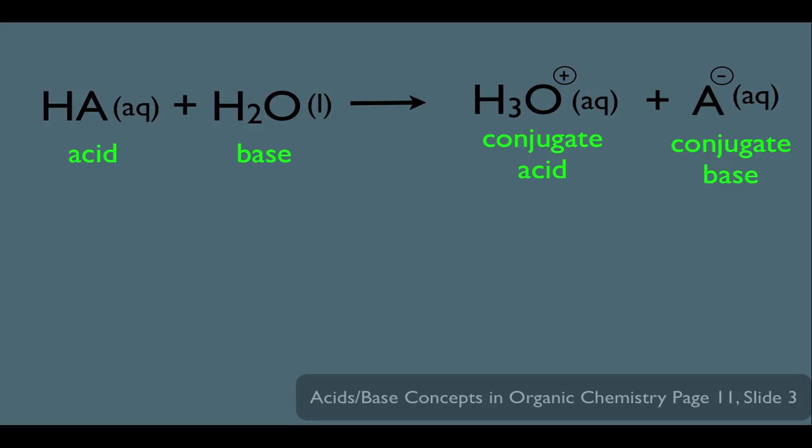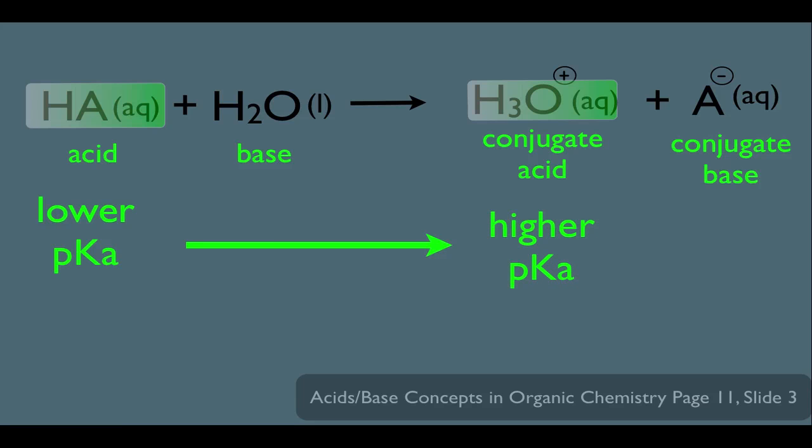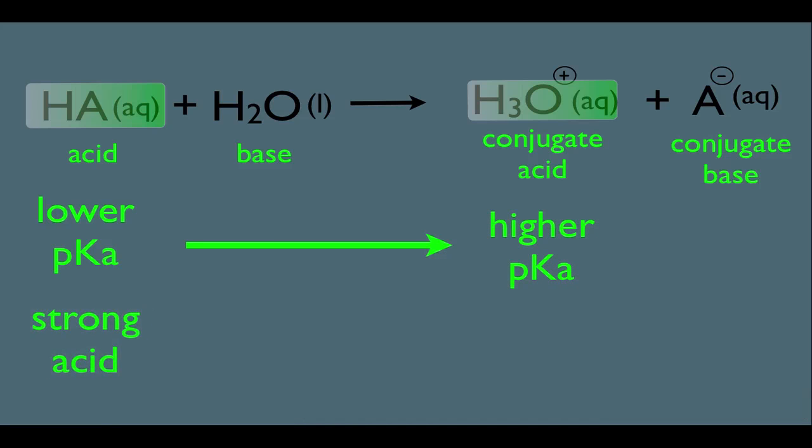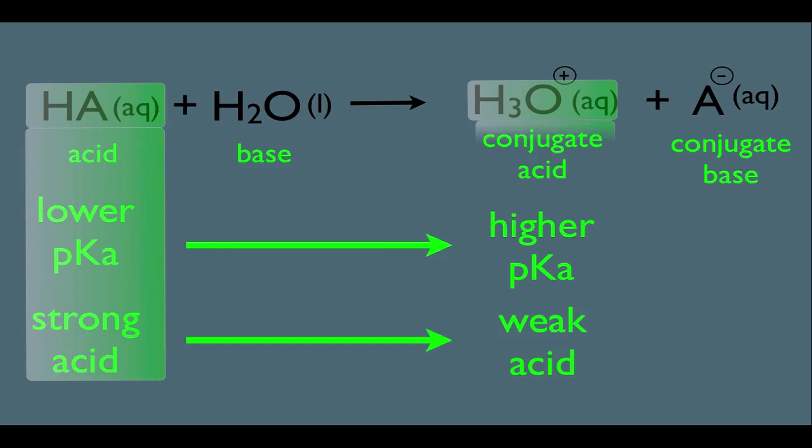To determine the direction of an acid-base reaction, we should focus on the acid here on the reactant side and the conjugate acid on the product side. An acid-base reaction will proceed from left to right if you're going from a lower pKa acid to a higher pKa acid, going from a strong acid to a relatively weaker acid.